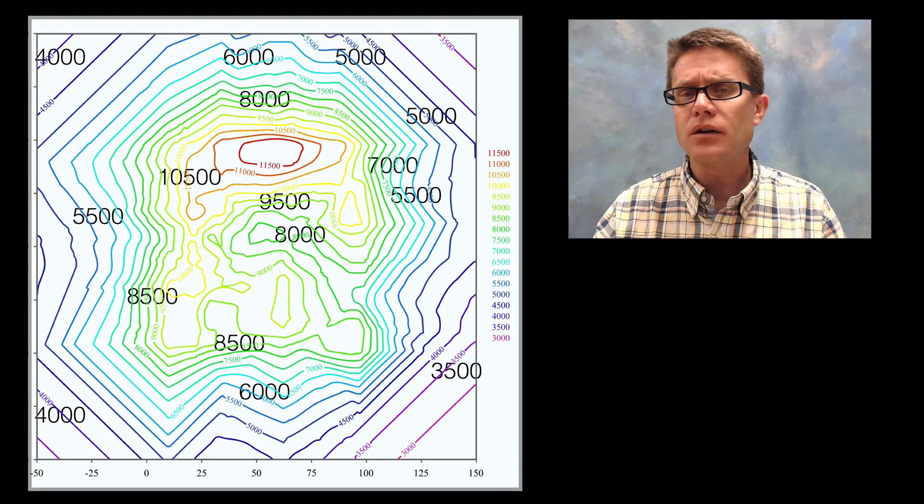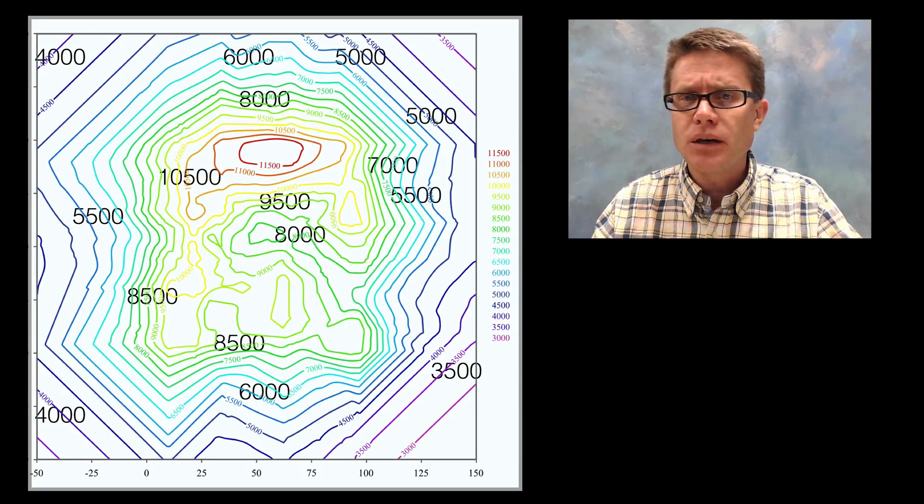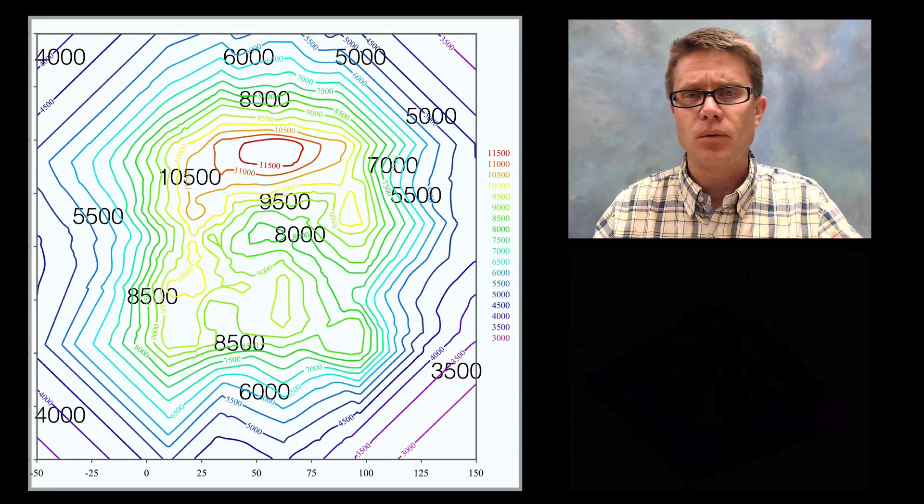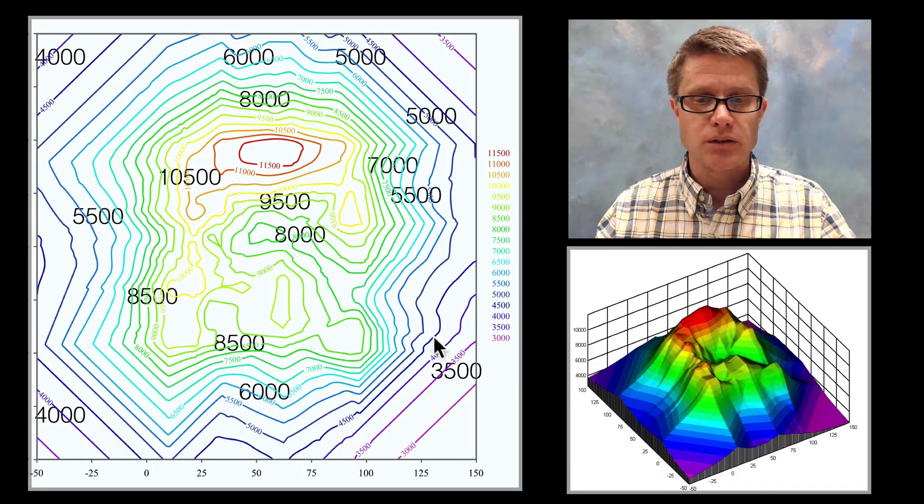It's showing us where the elevation is the same. Where are all the scalar quantities equal? And if you know anything about this you would be able to figure out what this object looks like in three dimensions. We'd have areas where it's higher. Areas where it's lower.